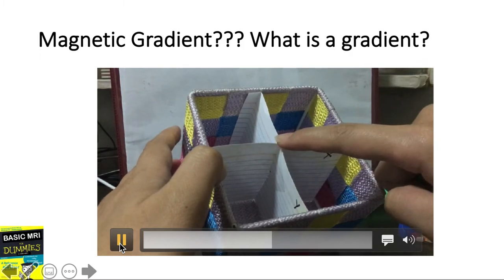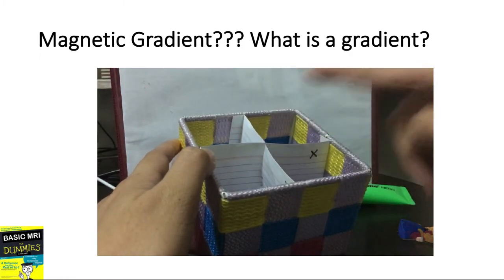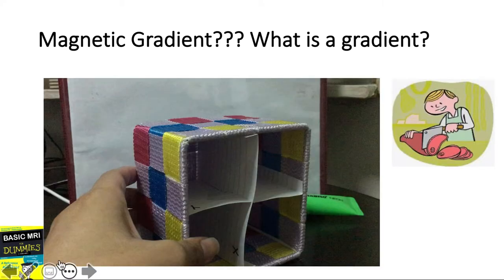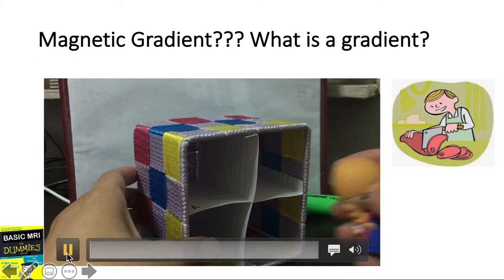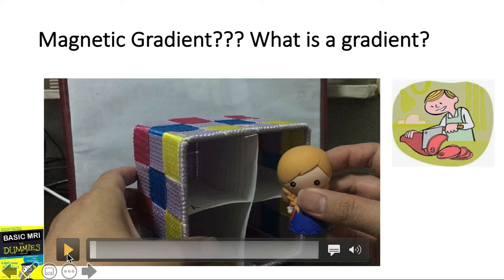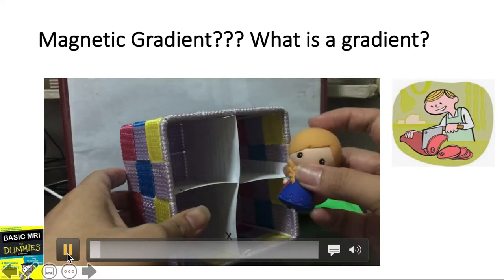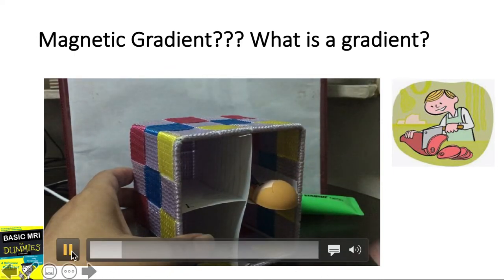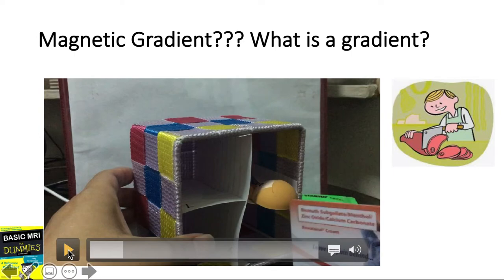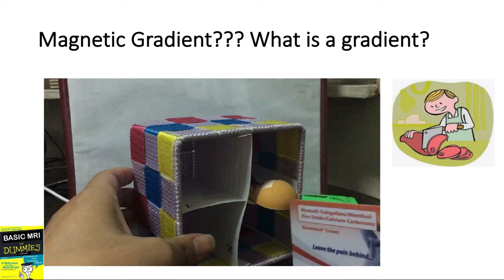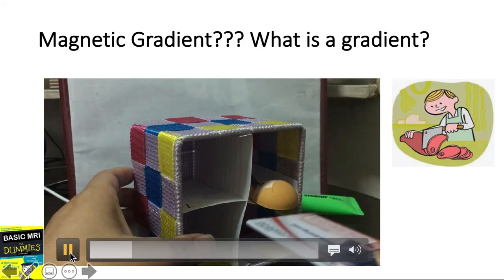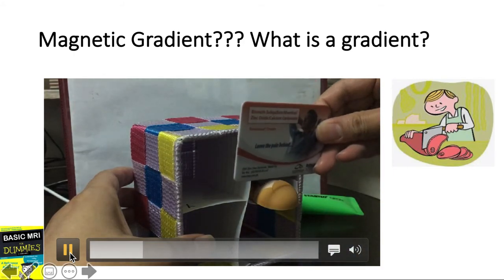These gradients can be fired perpendicular to the patient along the x, y, or z axis. Visualize a patient lying supine within an MRI magnet. We can then control which magnetic gradient is sent through the x, y, or z axis — for example, a gradient sent in the y-axis or the x-axis.